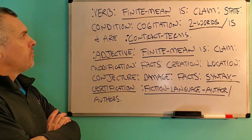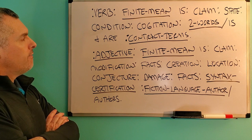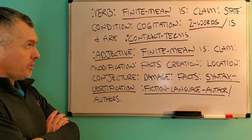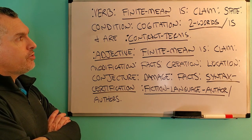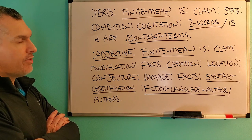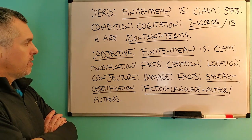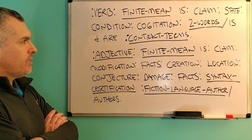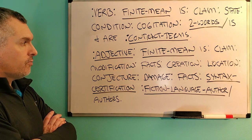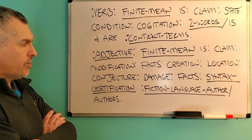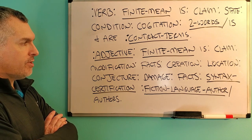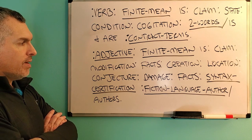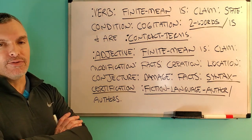Next up we have verb. For the verb, the finite meaning is: with the claim of the state, with the condition of the cogitation, with the two words 'is' and 'are', by the contract terms. Next we have adjective. For the adjective, the finite meaning is: with the claim of the modification, with the facts of the creation, with the location of the conjecture, with the damage of those facts, with the syntax certification by a fiction language author and authors.